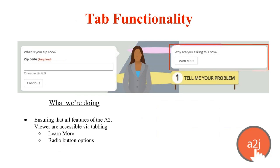Another important accessibility function is the ability to tab throughout an entire web page without using a mouse or touching the screen. The A2J Viewer currently does not allow an end user to tab to the learn more or select a radio button solely by tabbing. We will be adding that functionality to ensure all features within the A2J Viewer can be used completely with tabbing alone.